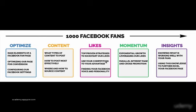Module four is the next step after likes — it's about momentum, and how to leverage the likes you got in module three to work for you. You're going to see exponential growth here because you're using what you've already earned. There are also a couple of other strategies introduced here, such as a parallel interest page and cross promotion.